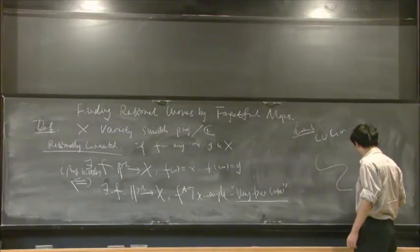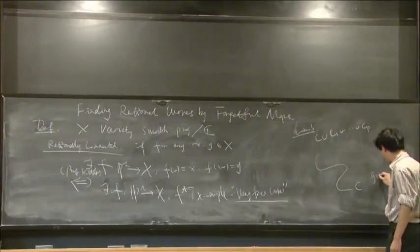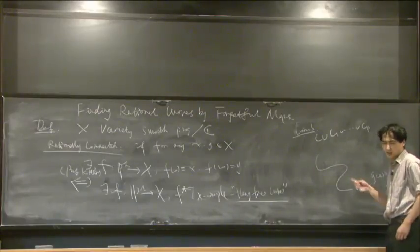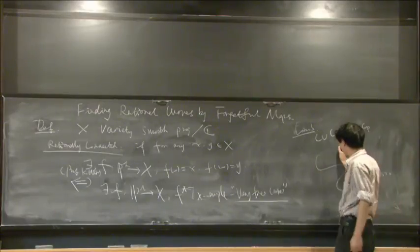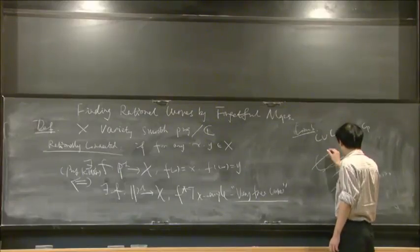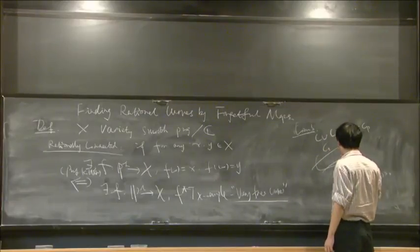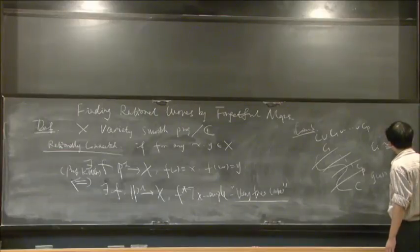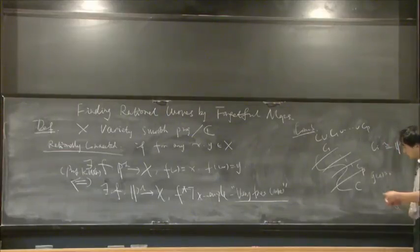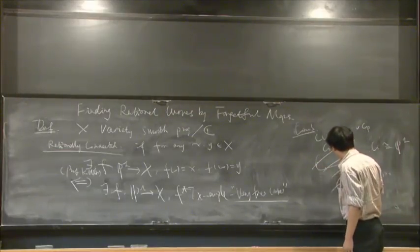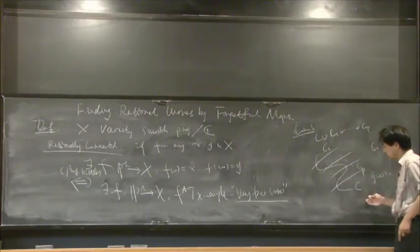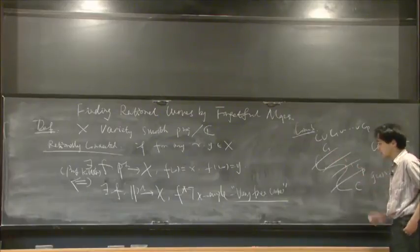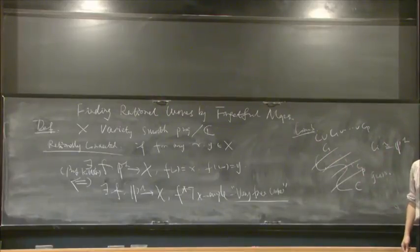Here C is the high genus curve and is smooth — any curve here is smooth. C₁ through Cₚ are all rational. All the Cᵢ intersect with the high genus curve C at only one point transversely, and all the Cᵢ have no intersection with each other.